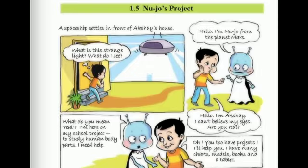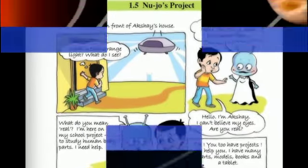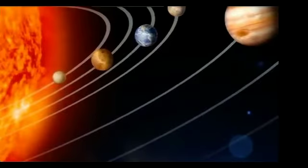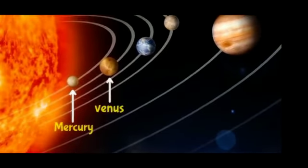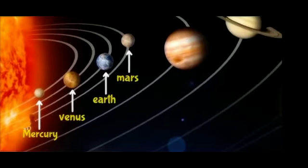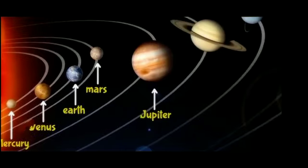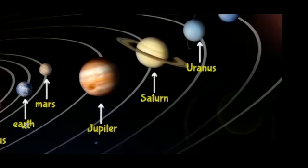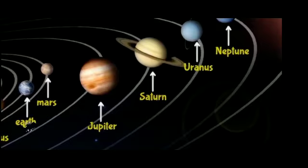Students, can you tell the name of all the planets in the universe? Yes sir — Mercury, Venus, Earth, Mars, Jupiter, Saturn, Uranus and Neptune. Well done! New Jaws is from Mars.